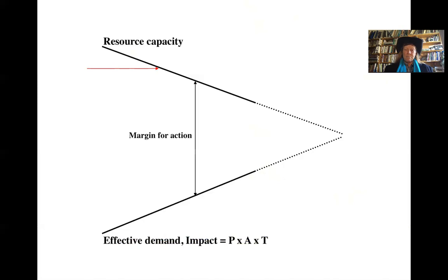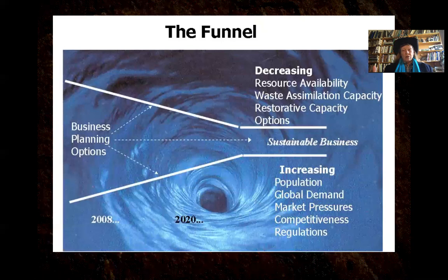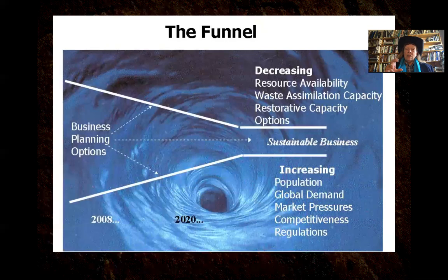Companies that ignore this bang into various sides of the funnel. What they ought to be doing is aiming for a sweet spot that extends resource capacity, drops our demand on the Earth's resources, and builds this runway to the future. So we're faced with fewer resources, less ability to absorb and detoxify our wastes, the need to restore, increasing population demand, and market pressures — sustainable business is one that finds the way through the funnel.